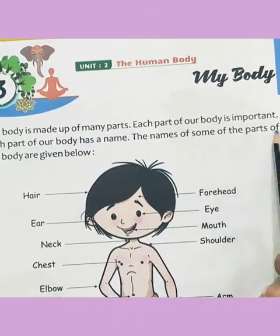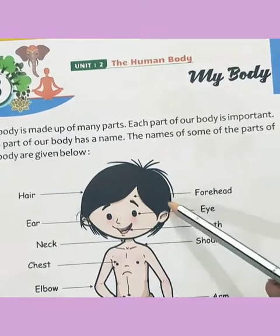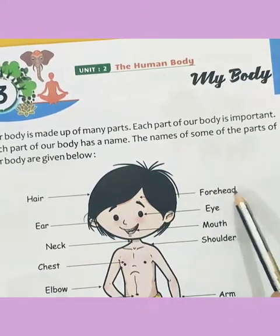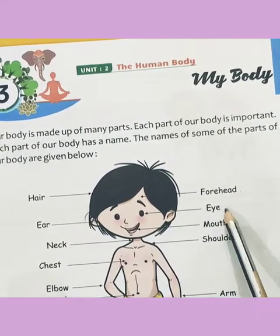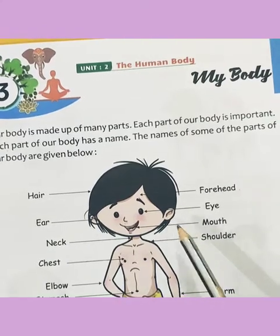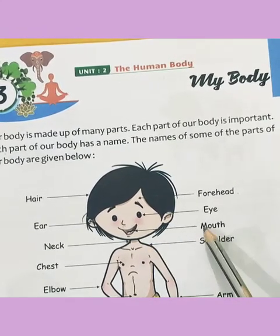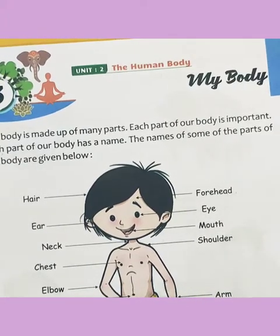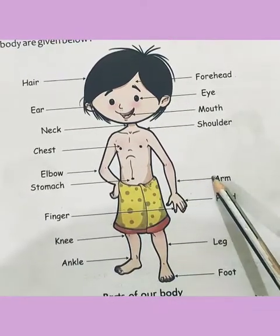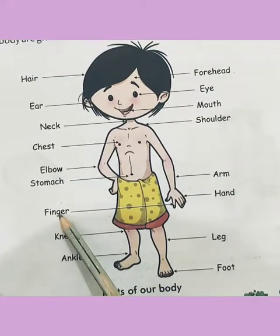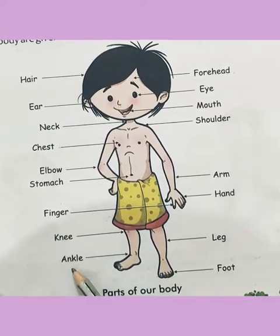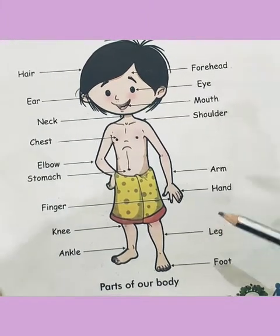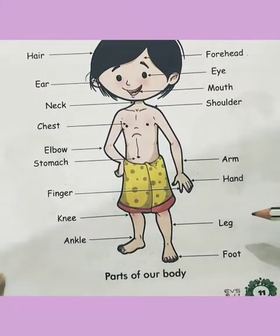The names of some parts of the body are given below: hairs, forehead, eyes, ears, neck, mouth, shoulder, chest, elbow, stomach, arm, hand, finger, knees, ankle, legs, foot. So children, these are our body parts.